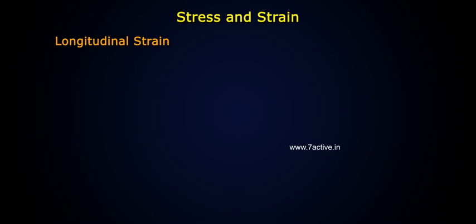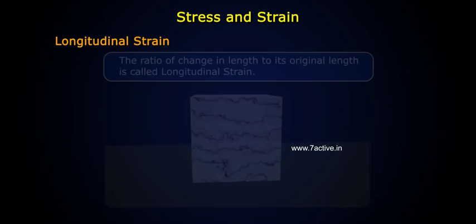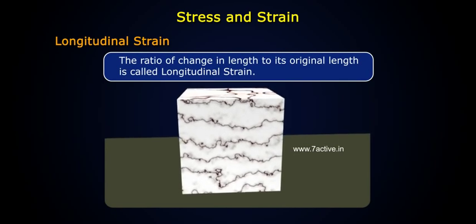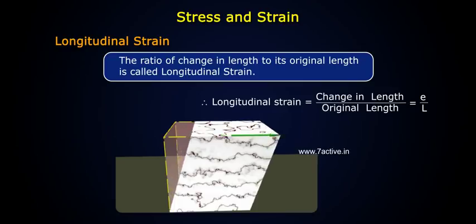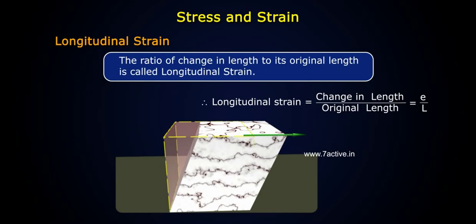1. Longitudinal strain: The ratio of change in length to its original length is called longitudinal strain. Therefore, longitudinal strain is equal to change in length by original length, equal to ΔL by L. Note: in longitudinal strain, the stress is always perpendicular to the surface of the body.